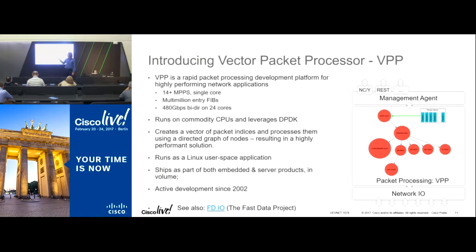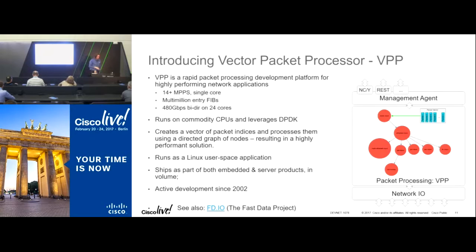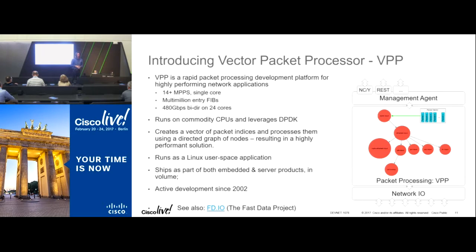There is one key thing that differentiates VPP from most other forwarders in the industry — and it's right there in the name: vector packet processing. Rather than taking in a single packet at a time and running it through the pipeline — L2 lookup, L3 lookup, processing, and so forth — we suck in a vector of up to 256 packets at a time and take them through the pipeline.